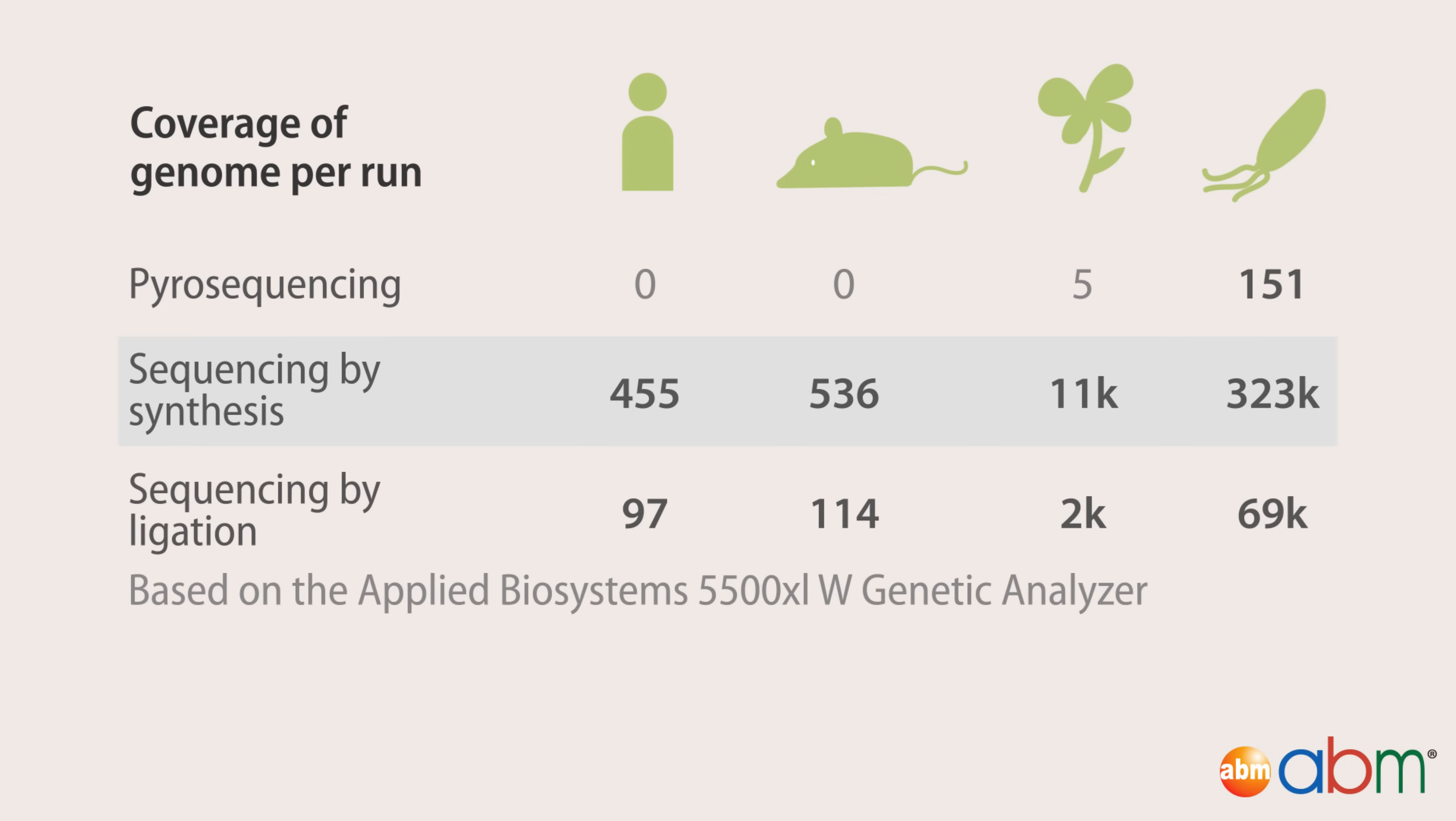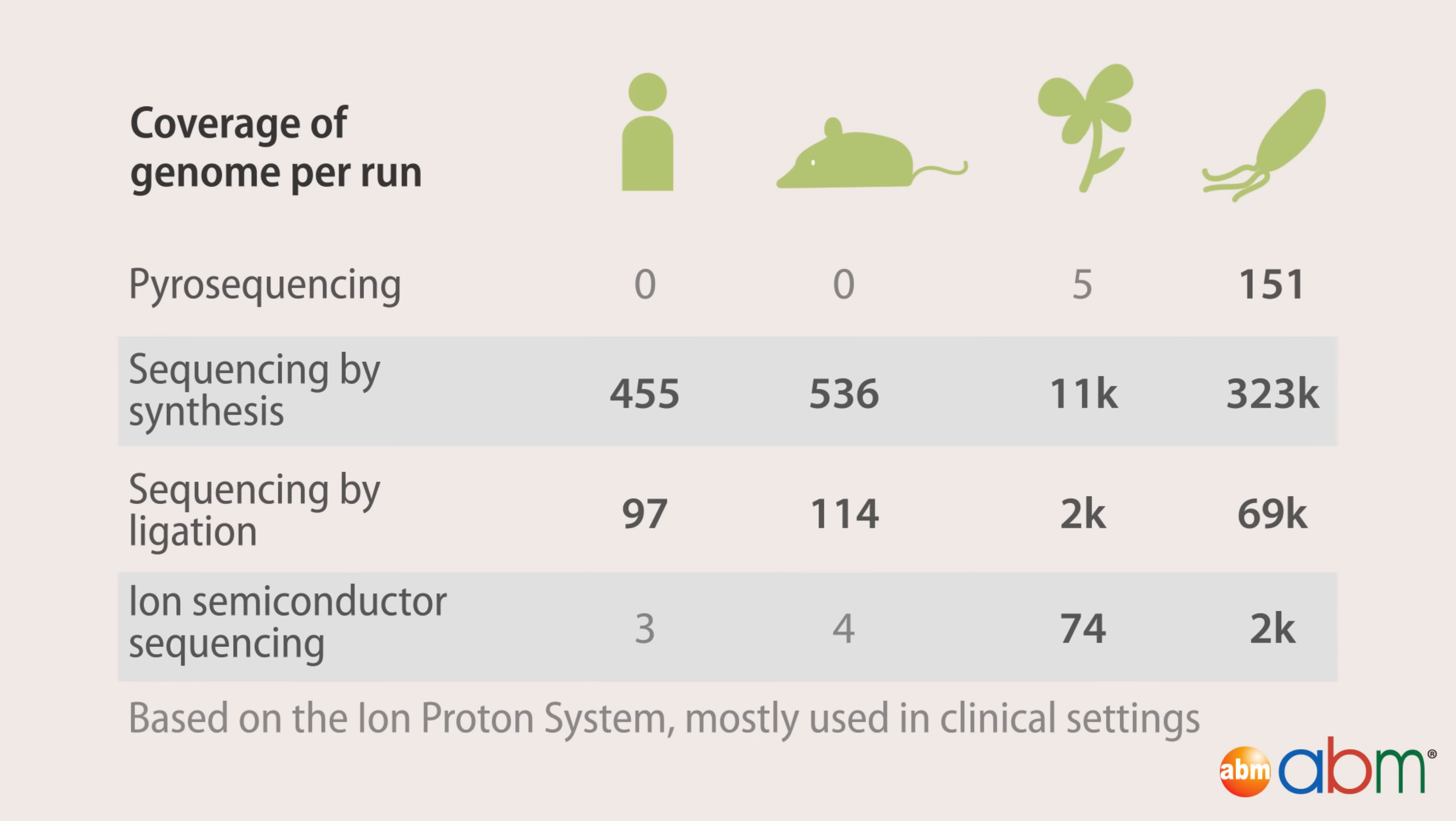The sequencing by ligation method also generates enough coverage for all genomes to be used. However, it isn't capable of generating nearly as much output as the Illumina HiSeq machines. The ion proton machine is used mostly in clinical settings because it is able to provide a sufficient size output within two hours.